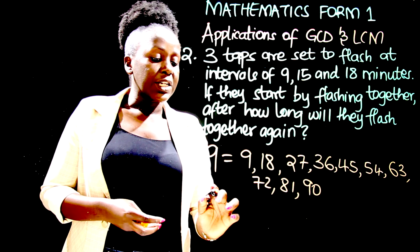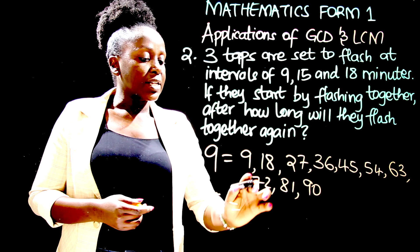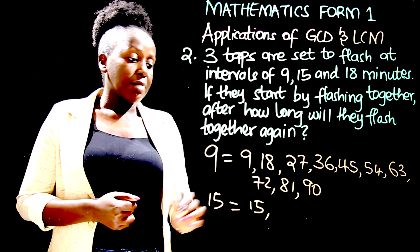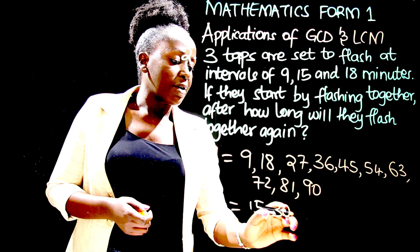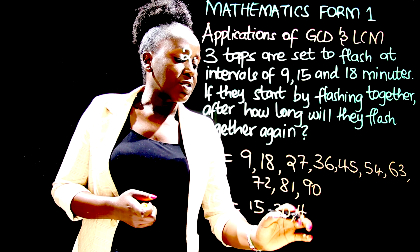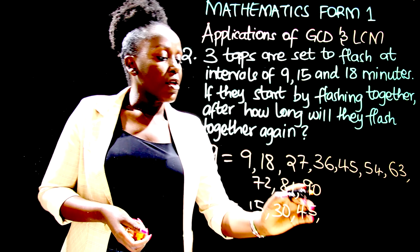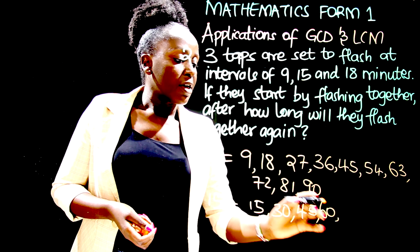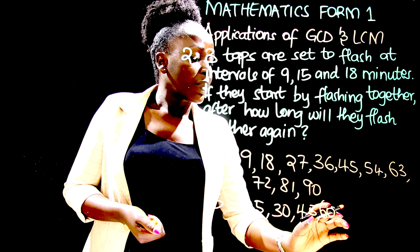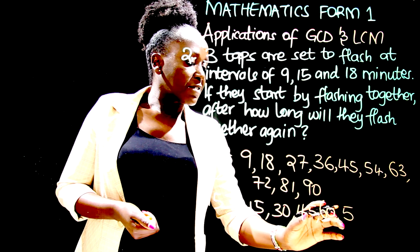Multiples of 15: 15 times 1 is 15, 15 times 2 is 30, 15 times 3 is 45, 15 times 4 is 60, 15 times 5 is 75.